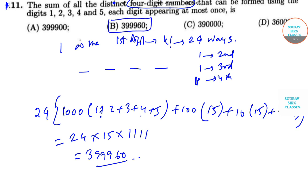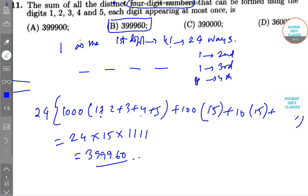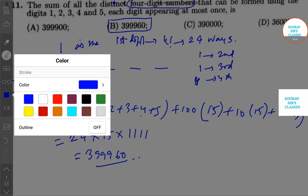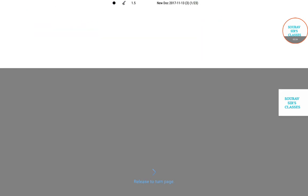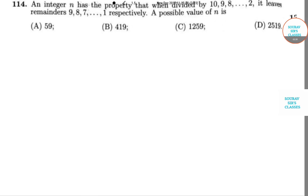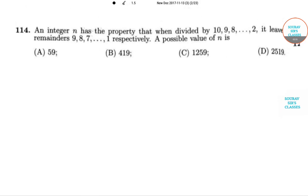Now next, I will be solving because many students have requested me to solve this question. Question number 112 says an integer n has a property that when divided by 10, 9, 8, and 2, it leaves remainders 9, 8, 7, and 1 respectively. A possible value of n is what?